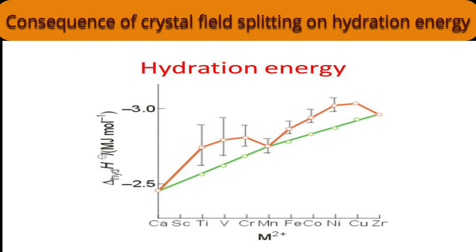After V²⁺, for Cr²⁺ (high spin, d⁴), the fourth electron enters the eg orbital. Entry into eg decreases CFSE — the numerical value drops from 1.2Δo to 0.6Δo; CFSE is −0.6Δo for Cr²⁺. Stability decreases, so energy released decreases and hydration decreases compared to V²⁺. Next, Mn²⁺ (d⁵) has CFSE equal to zero, the same as Ca²⁺. Where CFSE is zero and crystal field effect is absent, we find usual behavior. Mn²⁺ falls back on the green line — that is the beauty of crystal field theory.